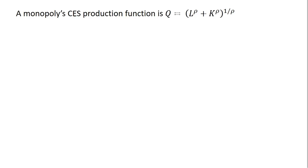So here's the setup. We have a monopoly. Its CES production function is given as follows. This monopolist has a constant elasticity of demand equal to minus 2.